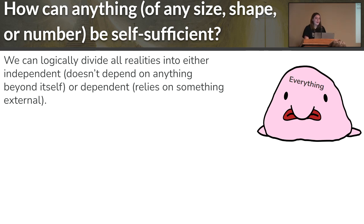How can anything have this self-sufficient property? What is this thing in the blob of everything? Or is it the whole blob of everything that has this property? We're going to start by dividing things in the blob of everything into two categories, either independent things or dependent things. Please try to remember this distinction because it is important going forward.